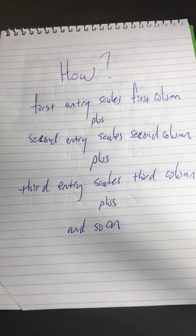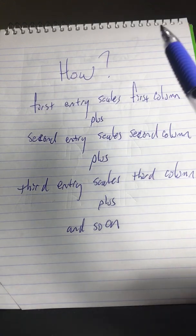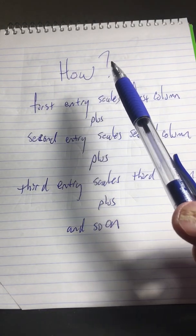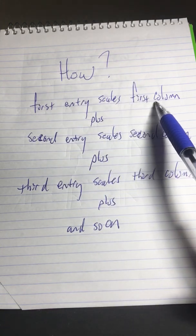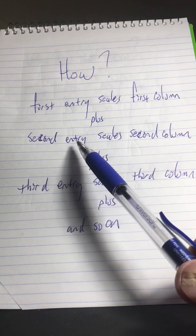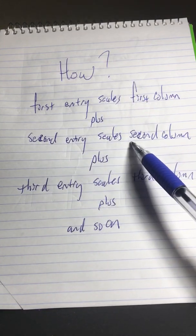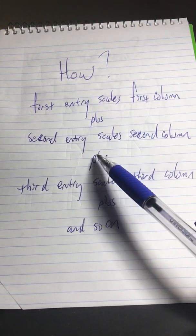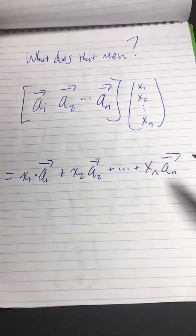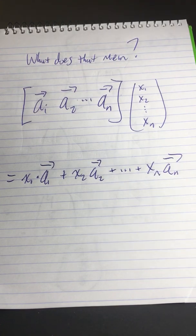Well, how does it do that mapping? You take the first entry in the input and you use it to scale up the first column in the function. Then you add the second entry in the input, which scales the second column. Then you add the third entry, which scales the third column and so forth. What does that mean? Let's use math symbols.